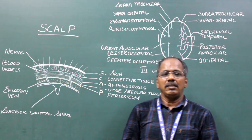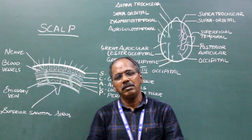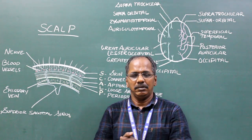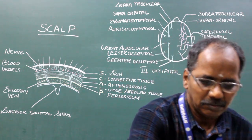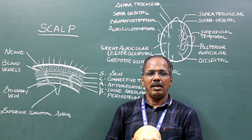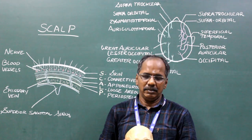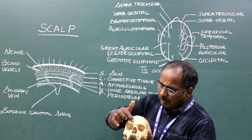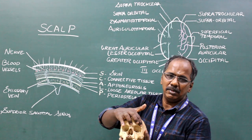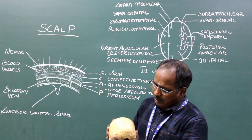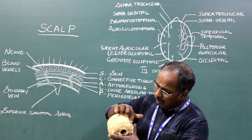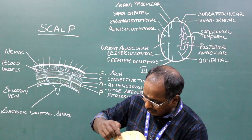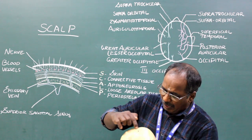Scalp — definition. It is the soft tissue covering the vault of the skull. The scalp extends anteriorly up to the superciliary arches, posteriorly up to the superior nuchal lines, and laterally up to the superior temporal line.